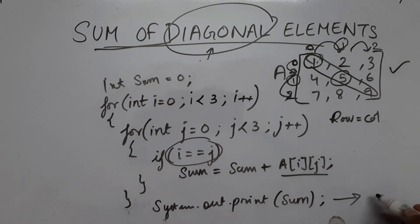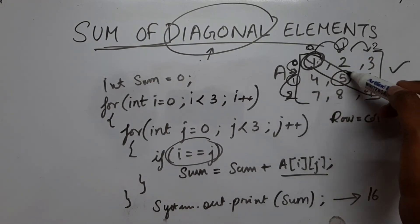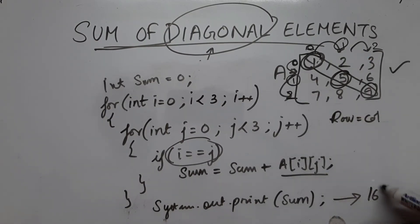we will be getting a result or output as 16, that is 1 plus 5 plus 9 is 16.